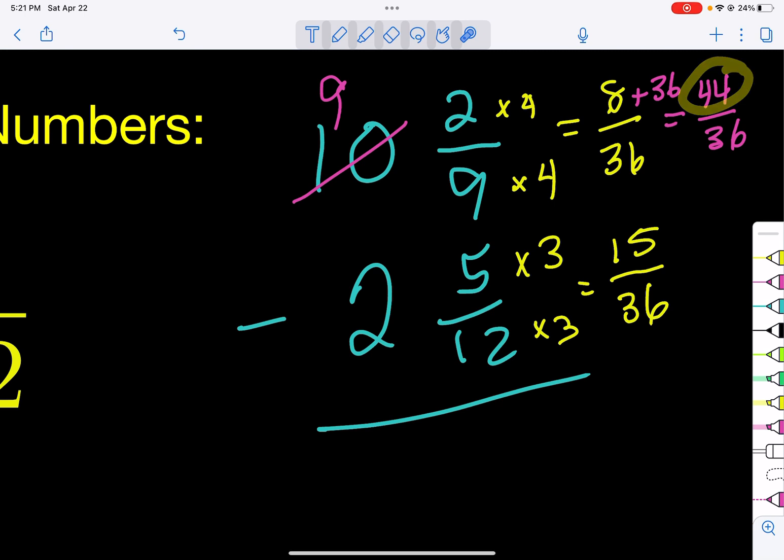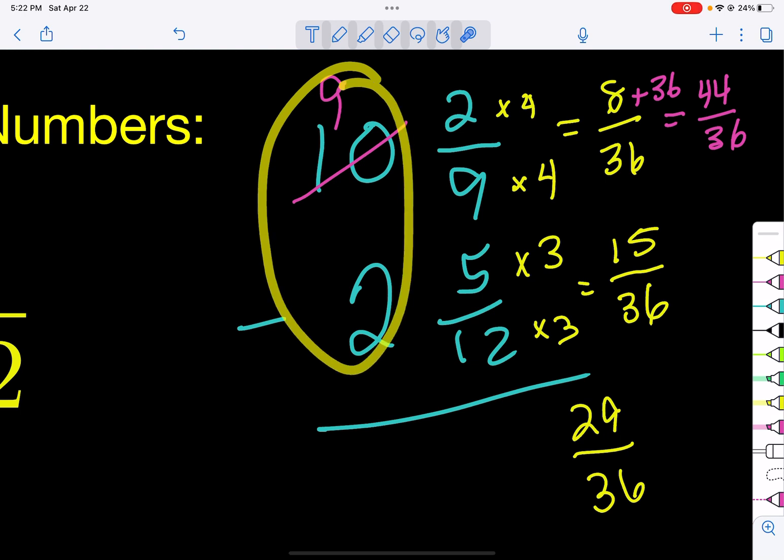44 minus 15, we're just going to subtract like normal, and that's going to be 29/36. Remember, when you add or subtract fractions you only add or subtract the top numbers and then you keep the bottom. Okay, next you just subtract these numbers here, so 9 minus 2 is 7. Some things to think about